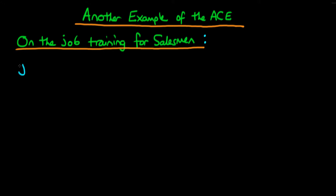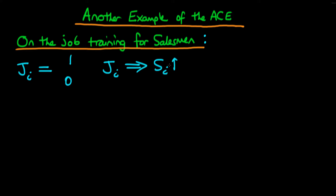The idea here is we might have some sort of binary variable ji which represents whether that particular candidate received on-the-job training. It would be equal to one if they did receive on-the-job training and zero otherwise. Essentially, for a manager, what you're interested in is whether that on-the-job training actually caused an increase in sales.